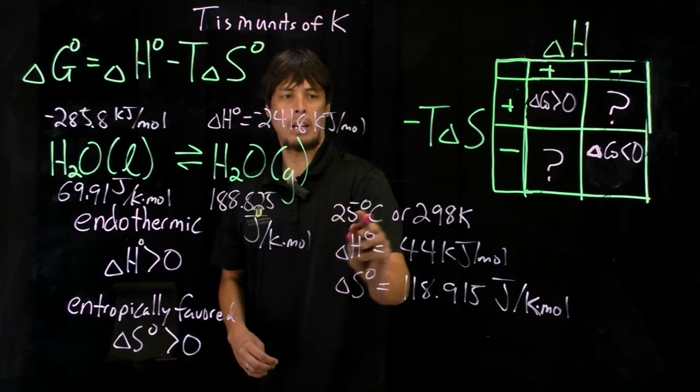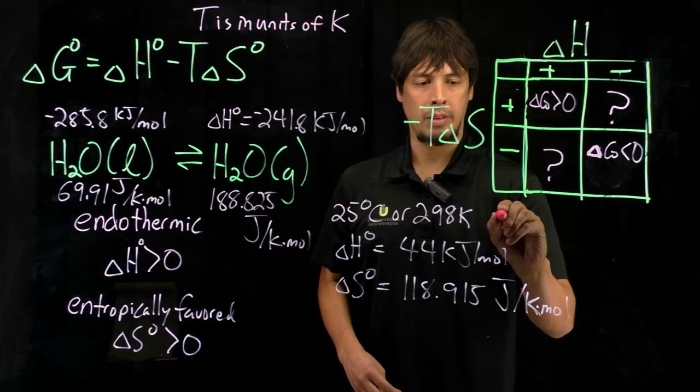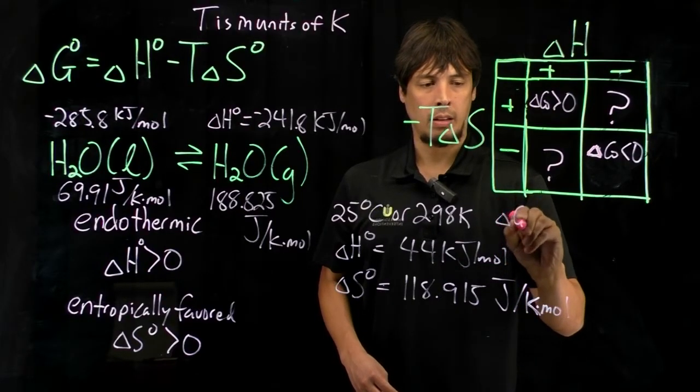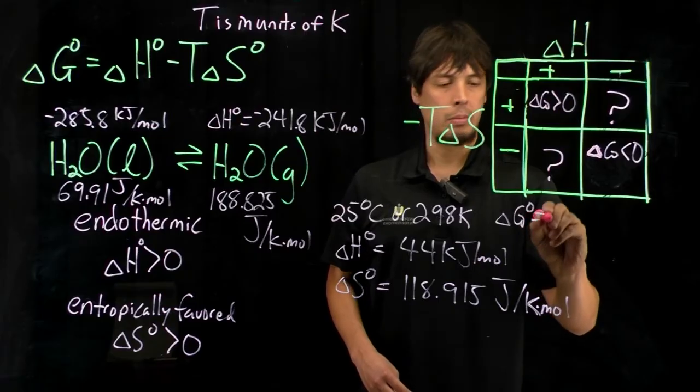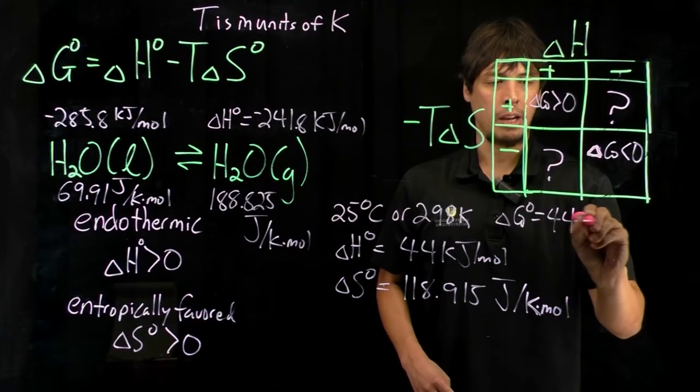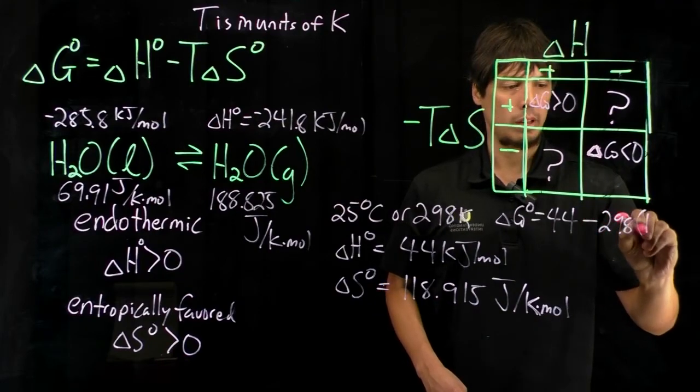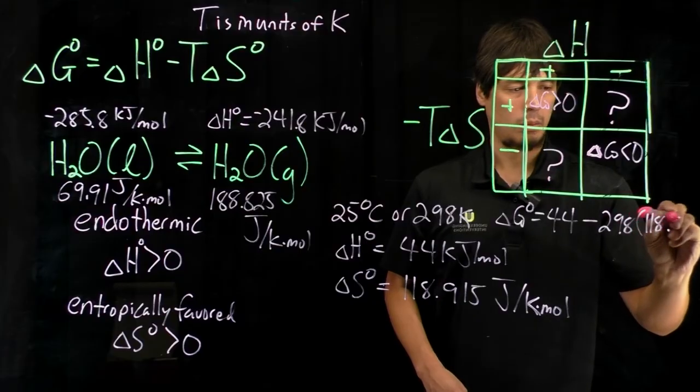So at 25 degrees C or 298 K, delta G is going to be equal to 44 minus 298 times 118.915.